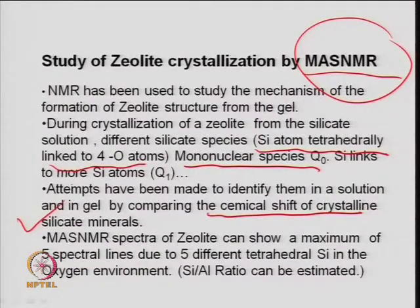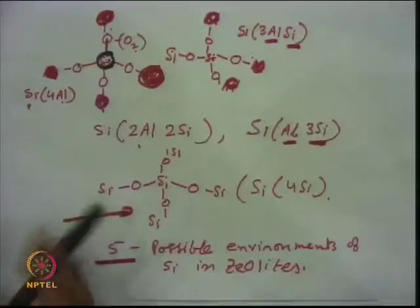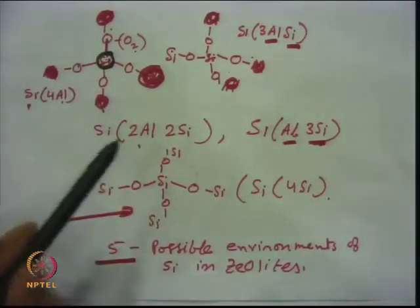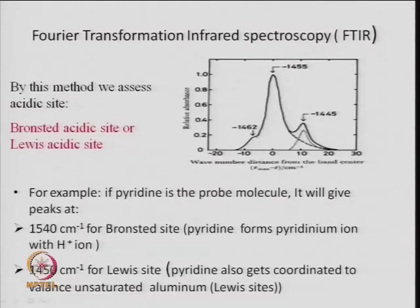MAS NMR spectra of zeolite can show a maximum of 5 spectral lines due to 5 different tetrahedral silicon oxygen environments. Silicon-to-aluminum ratio can be estimated from these 5 possible environments — how many silicon and aluminum are attached to the framework. One can easily find out the silicon-to-aluminum ratio of the zeolite. FTIR is another tool for determining acidity.